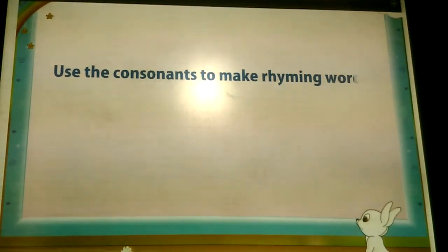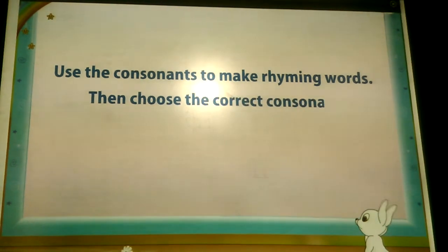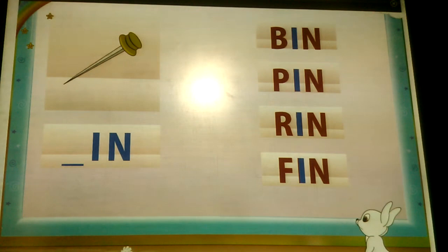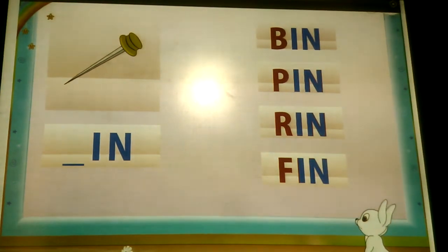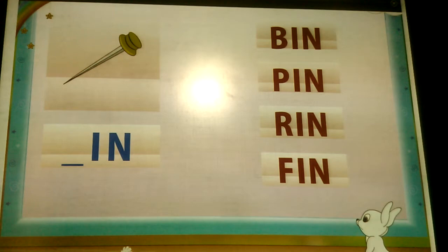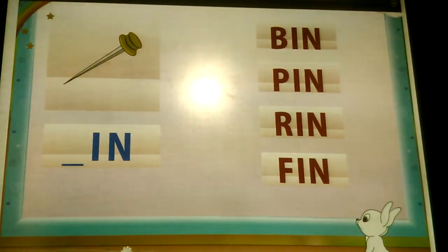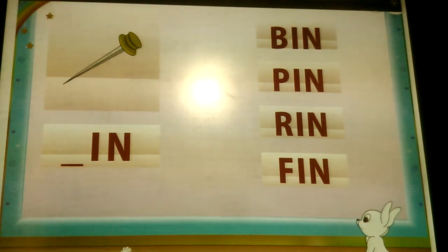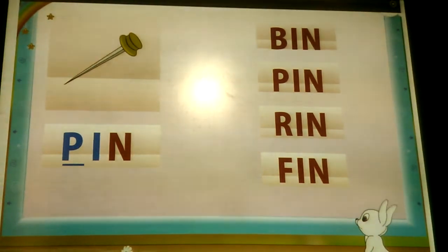Now let us do an activity. Here is a set of consonants. Use the consonants to make rhyming words, then choose the correct consonant and name the picture. All these words end with I, N. The consonants are B, F, R, and F. The rhyming words are bin, pin, rim, fin. The word that matches with the picture is F, I, N — fin.